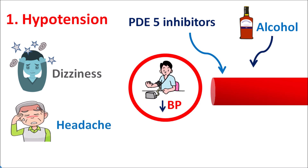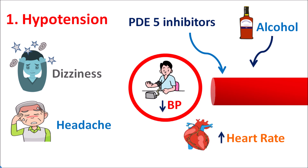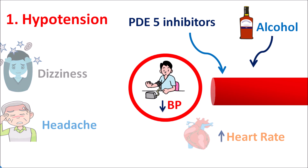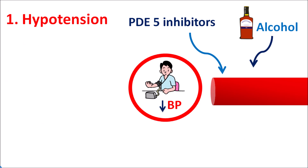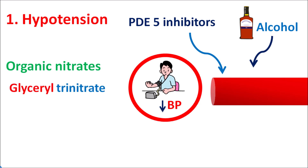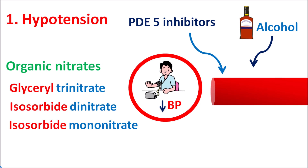These drugs may produce symptoms such as dizziness, lightheadedness, and headache because of cranial vasodilatation. They can also increase heart rate due to a reflex action stimulated by vasodilatation. PDE5 inhibitors should also be carefully combined with other drugs — for instance, organic nitrates such as glyceryl trinitrate, isosorbide dinitrate, and isosorbide mononitrate, which are indicated for angina, can produce severe hypotension when combined with PDE5 inhibitors.